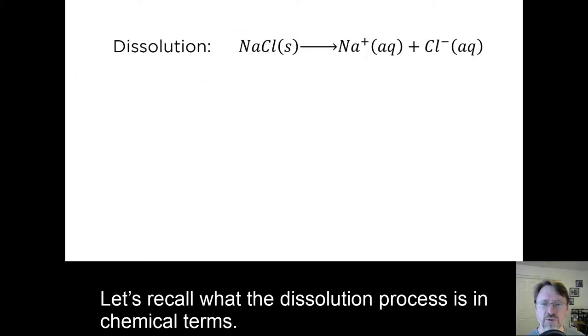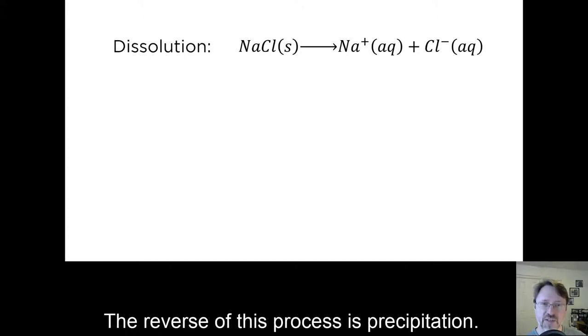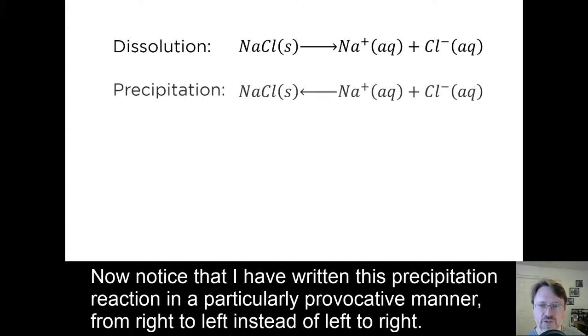Let's recall what the dissolution process is in chemical terms. The solute, in this case sodium chloride, dissociates into sodium and chloride ions in water. The reverse of this process is precipitation. Now notice that I have written this precipitation reaction in a particularly provocative manner, from right to left, instead of left to right.